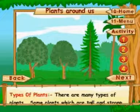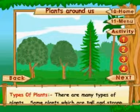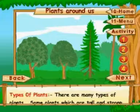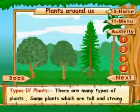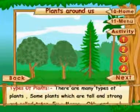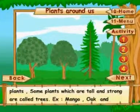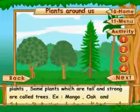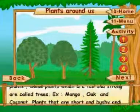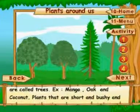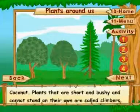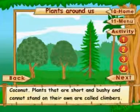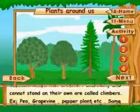There are many types of plants. Some plants which are tall and strong are called trees. Examples include mango, oak, and coconut. Plants that are short and bushy and cannot stand on their own are called climbers.